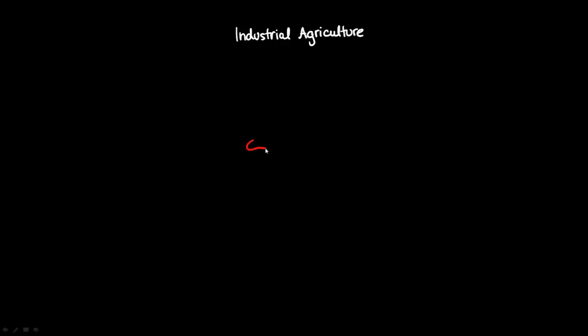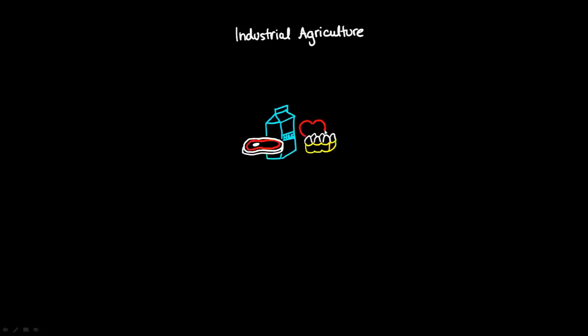Let's talk about industrial agriculture, or industrial farming. This is the most prevalent kind of farming that we see today in developed countries like the United States of America, so most of our food comes from this kind of farming. It's basically a way of producing lots of food cheaply. Most of the meat, milk, eggs, and even most of the fruits and vegetables that we would buy in a typical supermarket would have been produced in this way.